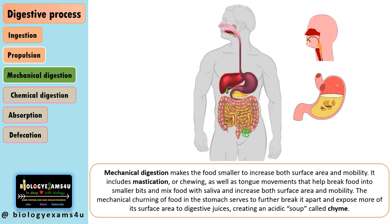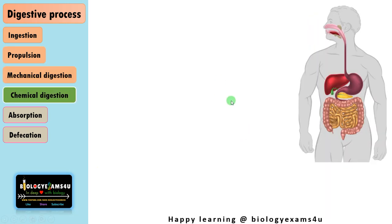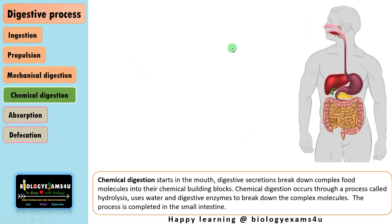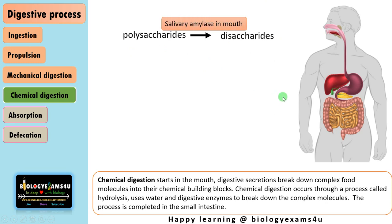In mechanical digestion, there is no change in the chemical nature of the food. In chemical digestion, which starts in the mouth, the process occurs through hydrolysis — mixing of water and digestive enzymes — to break down complex molecules into simpler molecules that can be absorbed in the small intestine. The process is completed in the small intestine, and the chemical nature of the food is changed from complex molecules to simpler absorbable molecules.